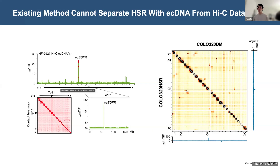This leaves a key question: how can we separate these two types of structural variation based solely on Hi-C data?